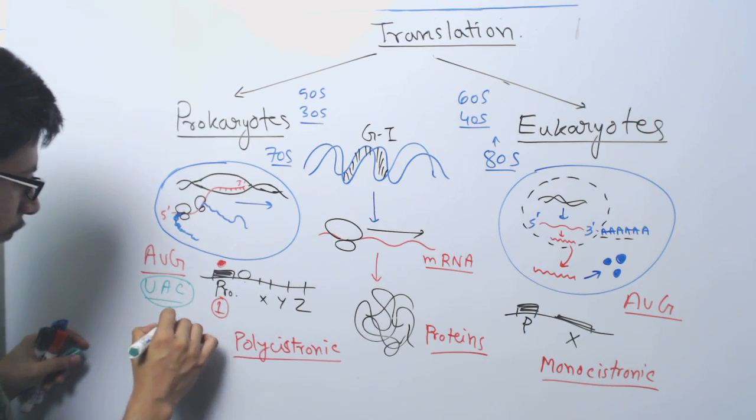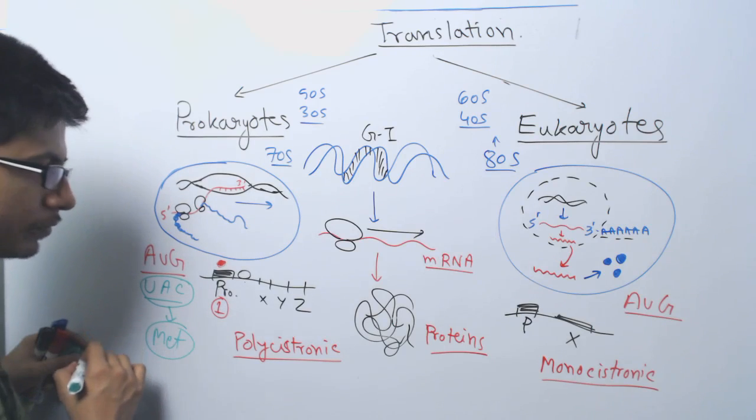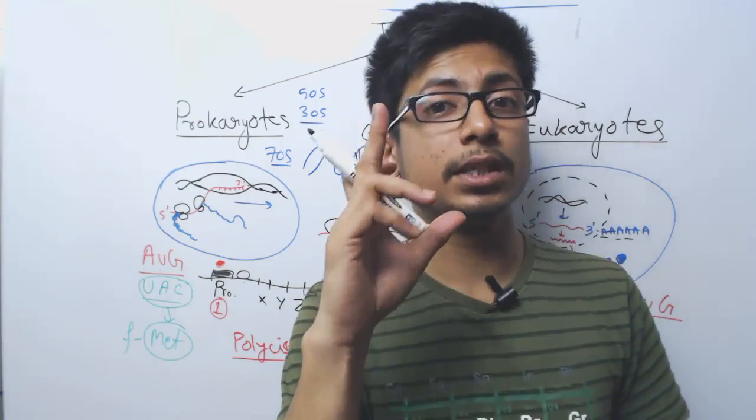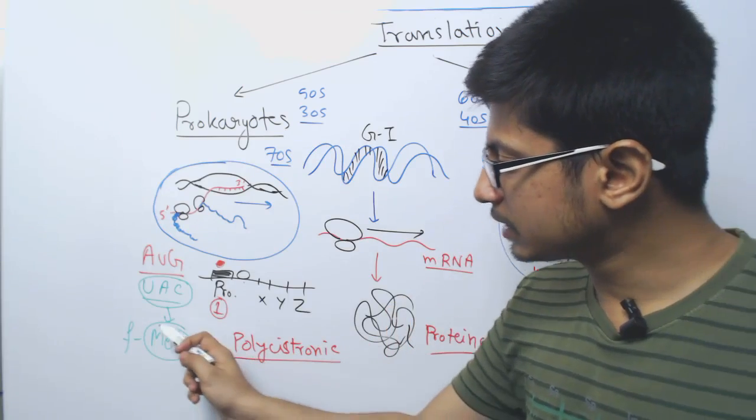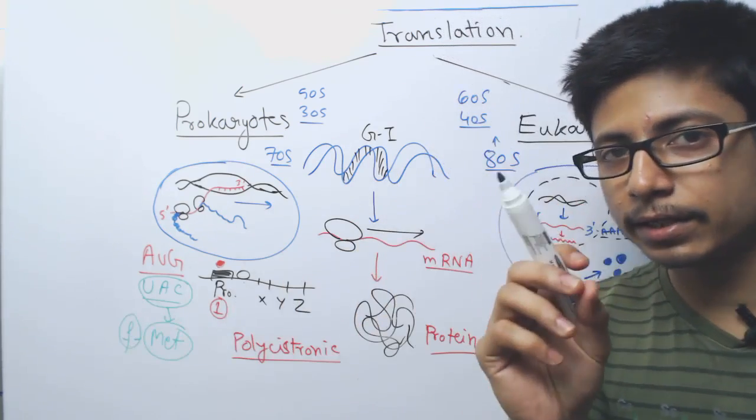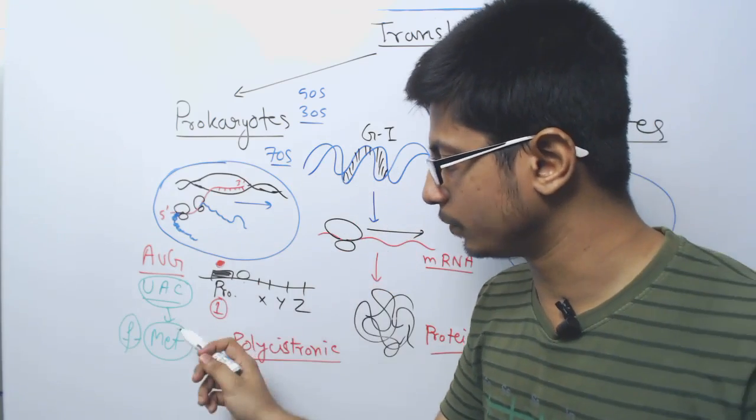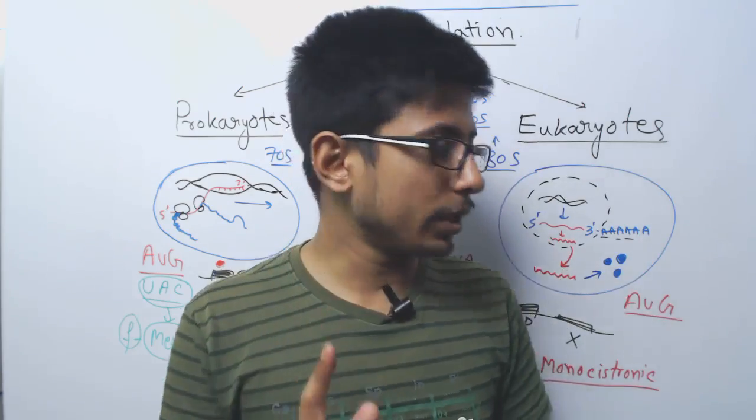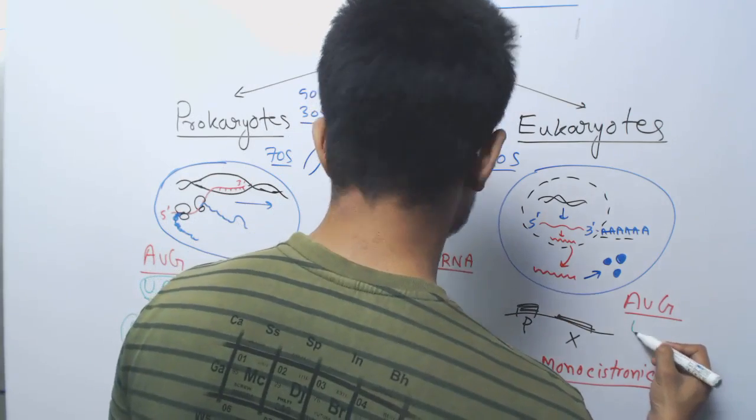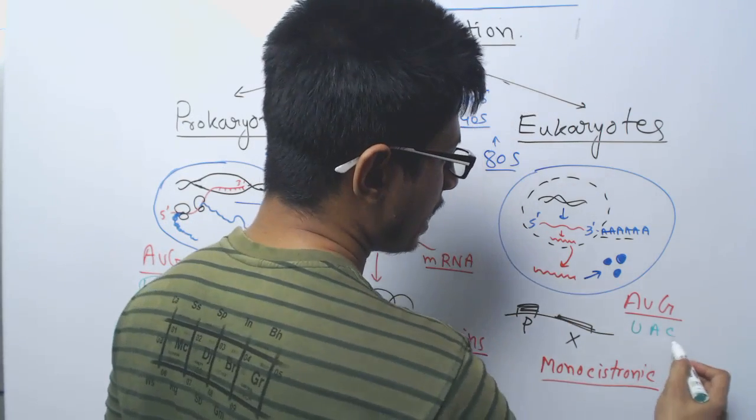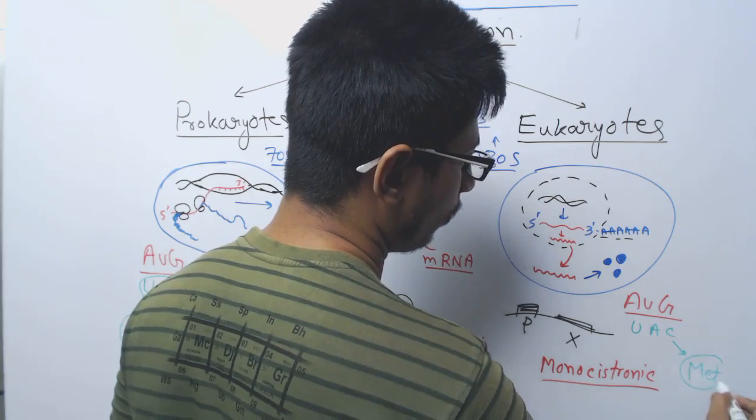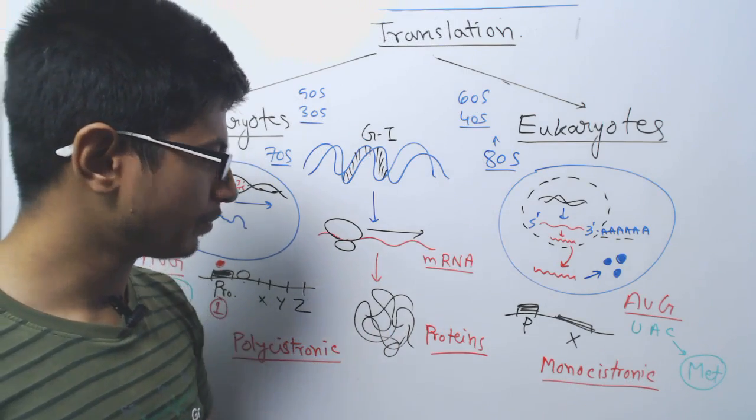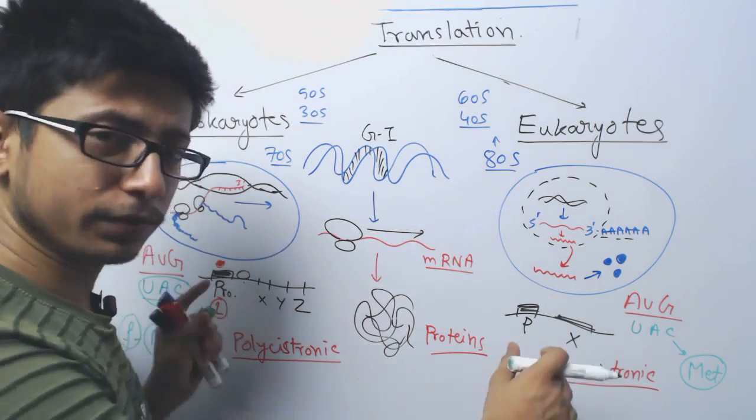This anticodon codes for methionine, but the methionine in prokaryotes, the first amino acid is modified by attaching a formylated group, a formaldehyde group to the methionine. So it is called formylated methionine. But the first amino acid brought in eukaryotes, they also have the same anticodon UAC, it codes for only methionine, no modification of methionine is entertained here.